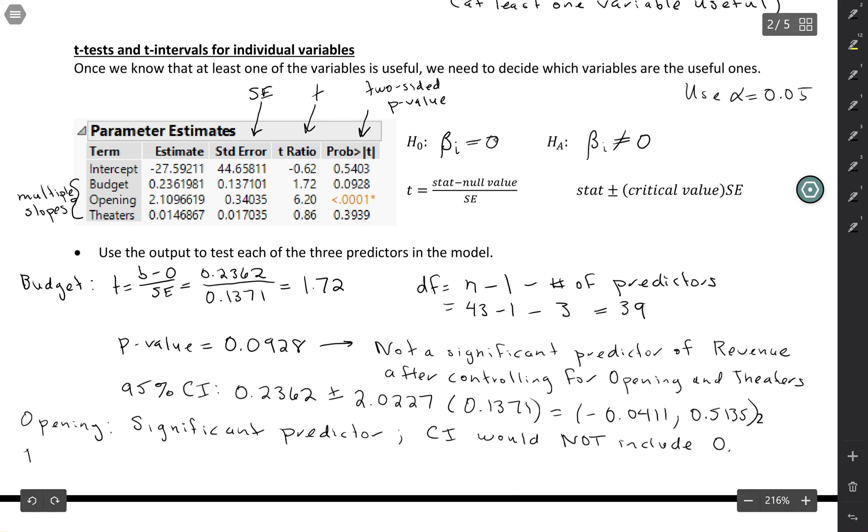Whereas theaters, that one actually has an even larger p-value than budget. So that one is not a significant predictor, at least not significant after controlling for the other variables in the model. So if we calculated a confidence interval for that one, the confidence interval there would include zero.